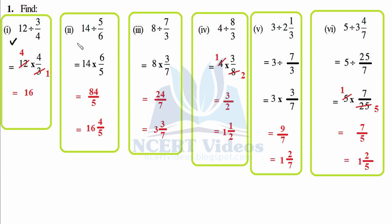Second: we write 14 as it is, division is converted to multiplication, and the fraction is flipped — 5/6 becomes 6/5, that is numerator to denominator and denominator to numerator. So 14 times 6 is 84 over 5. Now it is improper, so you have to change it to proper: 5 times 16 is 80, giving 16 and 4/5.